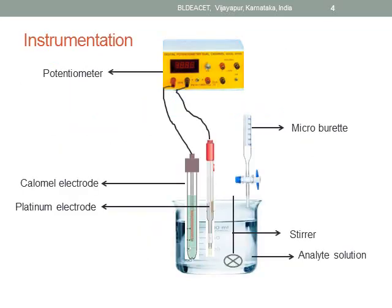Coming to the instrumentation part of potentiometric analysis. A typical potentiometric setup consists of a potentiometer device which displays EMF values of the cell. It is connected with two electrodes — one is a reference electrode, here the example of a calomel electrode, and another is a platinum electrode which is an indicator electrode. These two electrodes are immersed in the analyte solution and connected to the potentiometer, with a stirrer placed for continuous stirring of the solution.